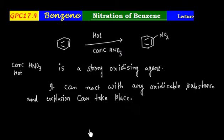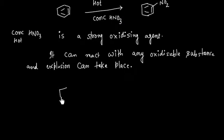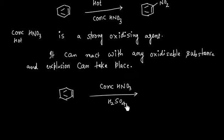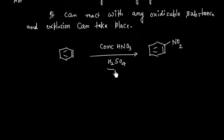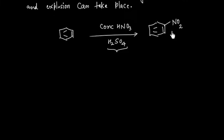So we use an indirect path. We use concentrated HNO3 in the presence of H2SO4. This also gives nitrobenzene. In this case, H2SO4 is basically acting as a catalyst to generate NO2 plus ion. So in this case, NO2 plus is the electrophile.